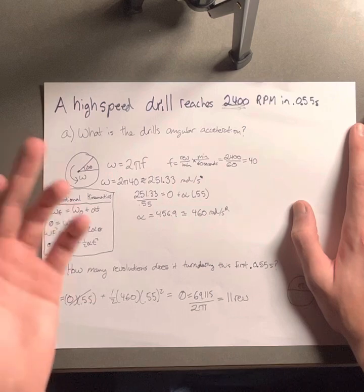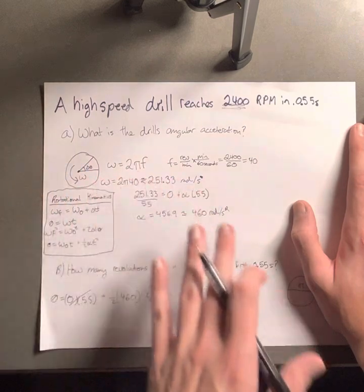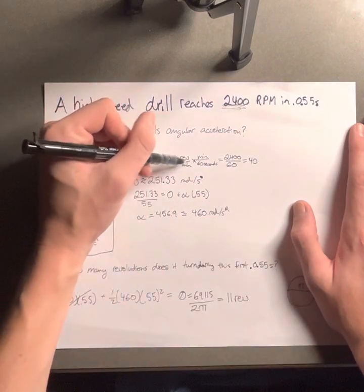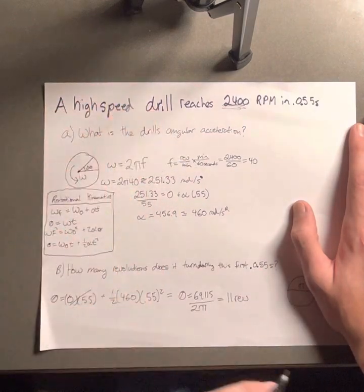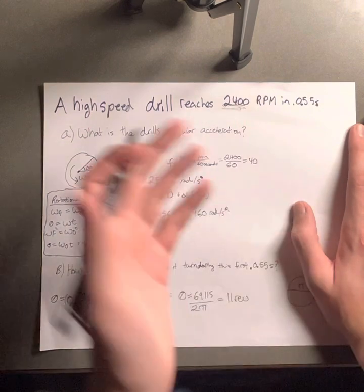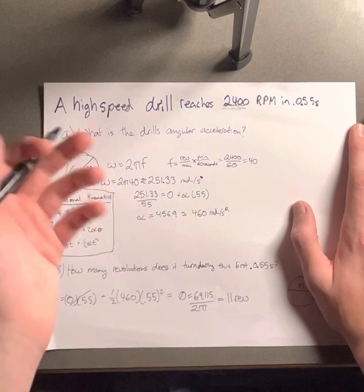So the equation for angular velocity is 2πf, 2π times frequency. We're going to change that to seconds, so we do revolutions over minutes times minute divided by 60 seconds in a minute, which gives us 40 revolutions per second times 2π.